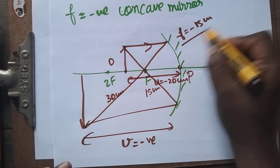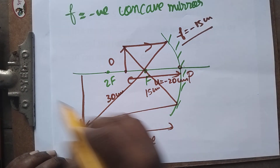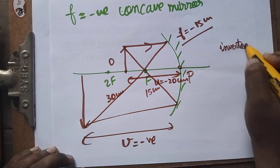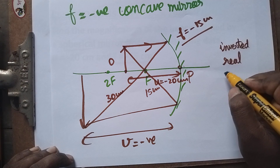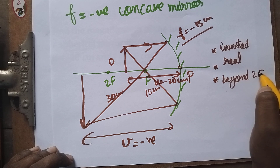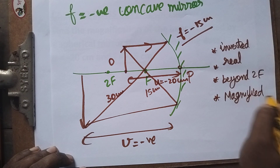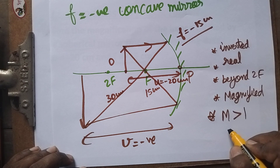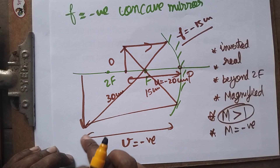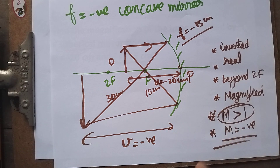The focal length is also negative. Now let's understand the characterization: the image is inverted, and it's real. An inverted image is always real, and it's formed beyond 2f, so it is magnified. The expected value of magnification will be more than 1, and since it's real, the magnification will be negative. Whenever magnification is more than 1, the image is getting magnified.